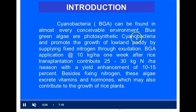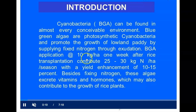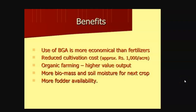Cyanobacteria can promote the growth of lowland paddy — BGA can supply fixed nitrogen to paddy plants. On application at 10 kg per hectare one week after rice transplantation, they can contribute 25 to 30 kg of nitrogen per hectare. Research studies also show that BGA is more economical compared to other fertilizers, and it reduces cultivation cost. Approximately you can save 1000 rupees per acre when using blue-green algae as a biofertilizer in the rice crop.